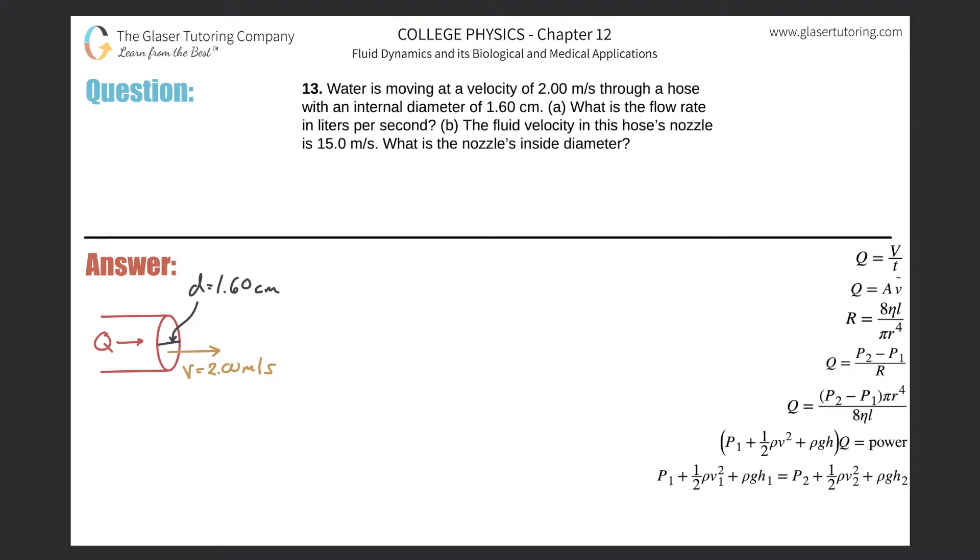Number 13, water is moving at a velocity of two meters per second through a hose with an internal diameter of 1.6 centimeters. Letter A, what is the flow rate in liters per second?